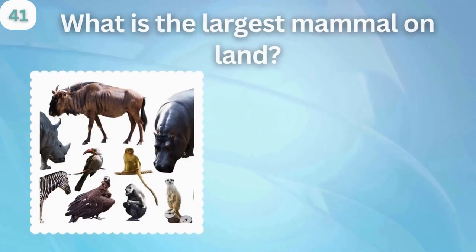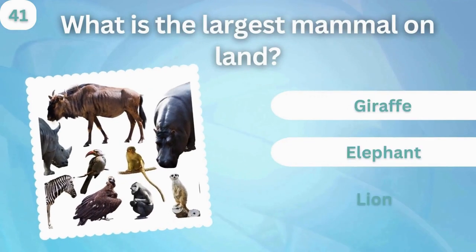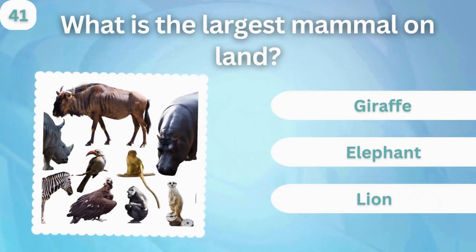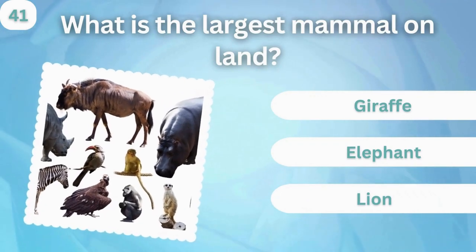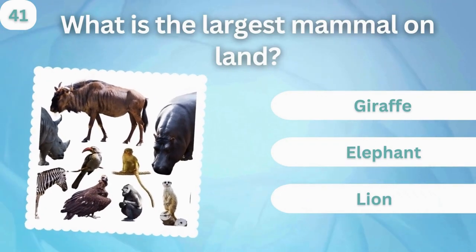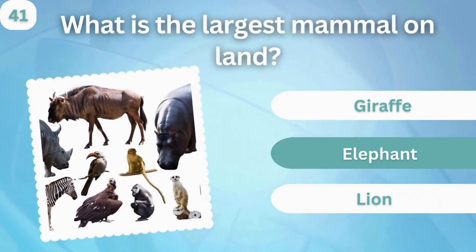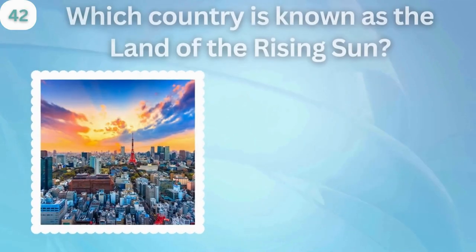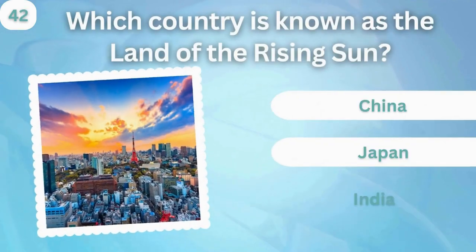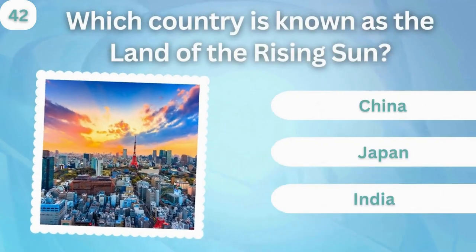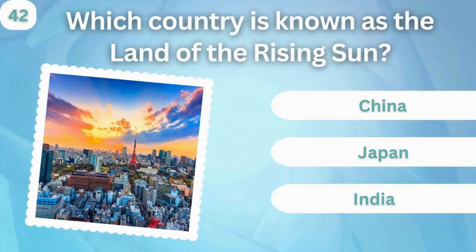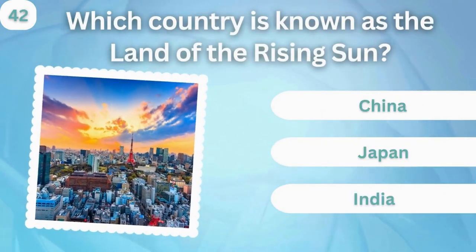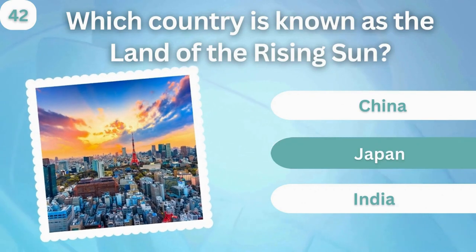What is the largest mammal on land? Giraffe, elephant, or lion? Elephant. Which country is known as the land of the rising sun? China, Japan, or India? Japan.